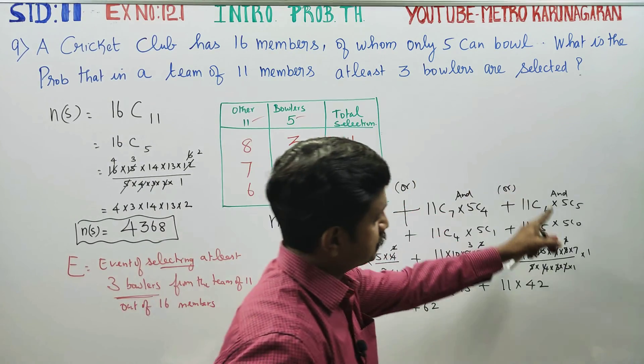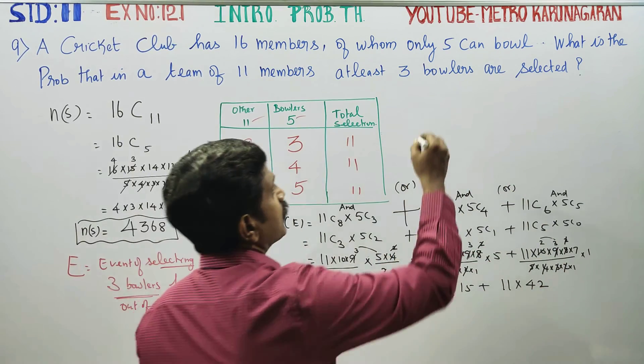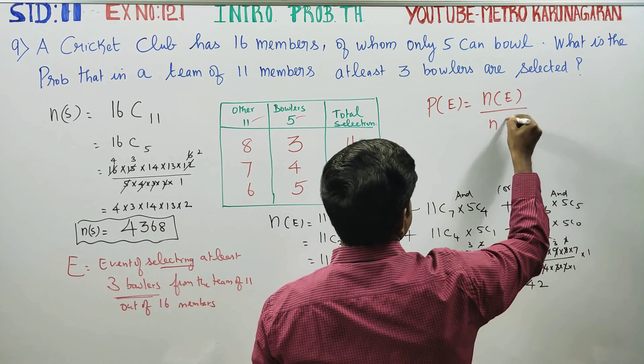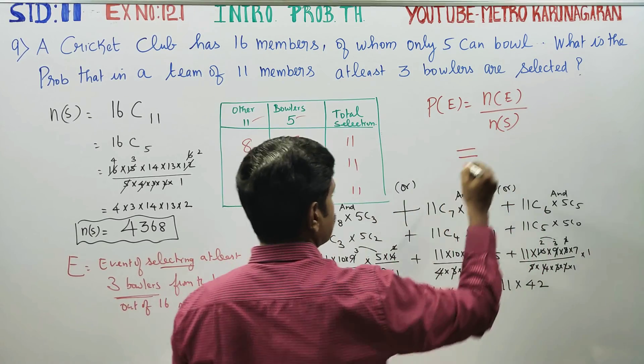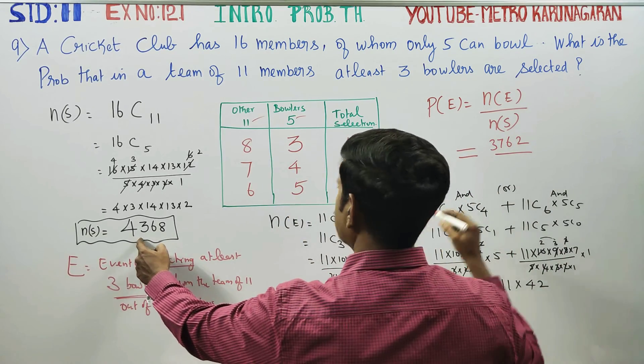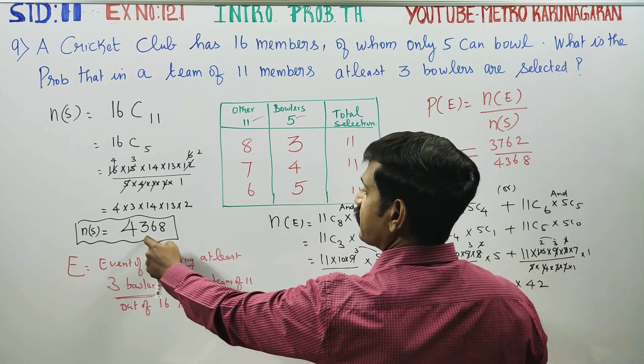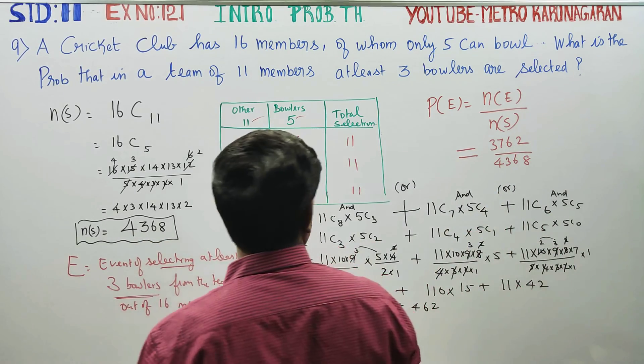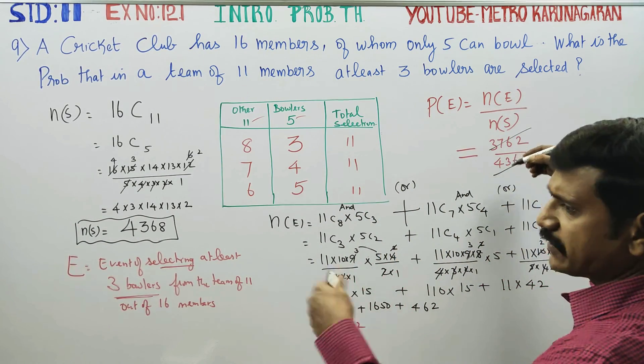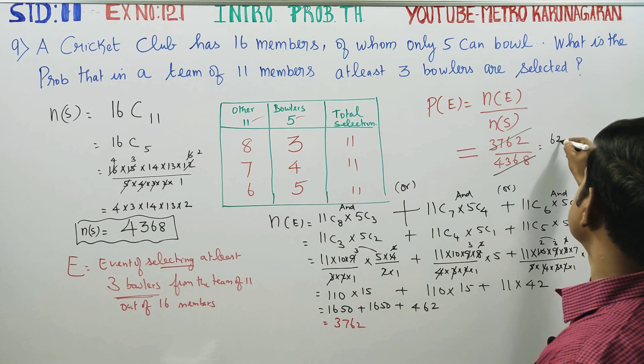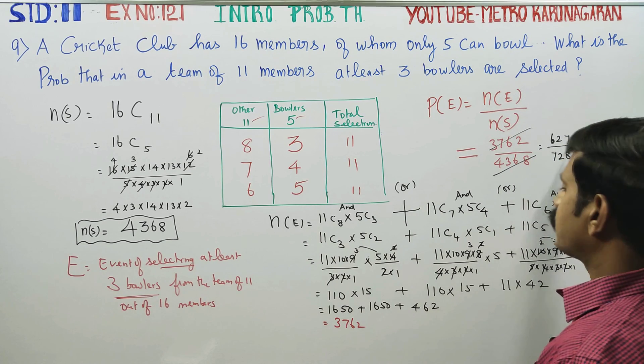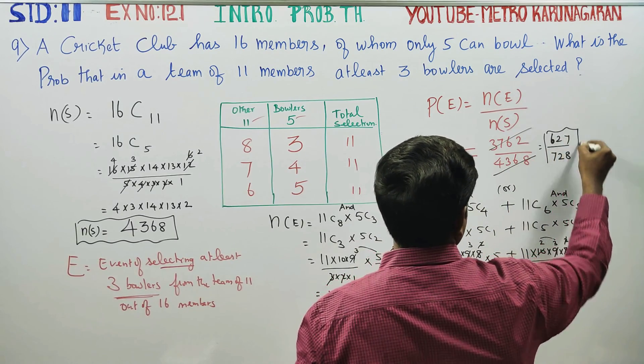After finding N of E, we want probability of E. Probability of E is equal to N of E by N of S. N of E is 3762. N of S is 4368. If you cancel, you will be getting 627 by 728. This is your final answer.